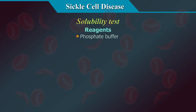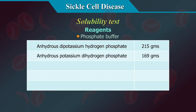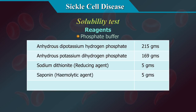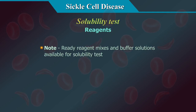Reagents for the solubility test: phosphate buffer containing anhydrous dipotassium hydrogen phosphate 215 g, anhydrous potassium dihydrogen phosphate 169 g, sodium dithionite (reducing agent) 5 g, saponin (haemolytic agent) 5 g, and water to 1 litre. Store refrigerated — stable for a 7-day period. Note: many ready reagent mixes and buffer solutions are available in the market for the solubility test.